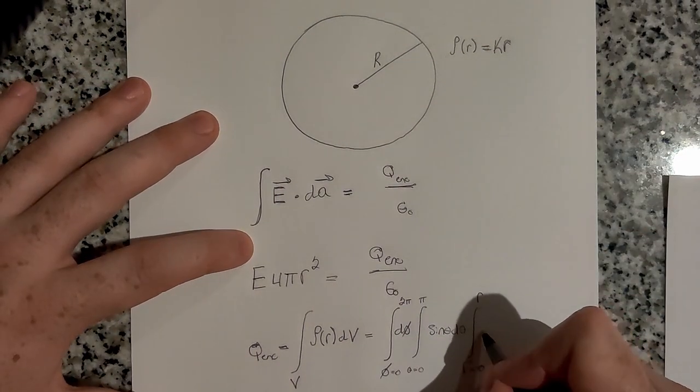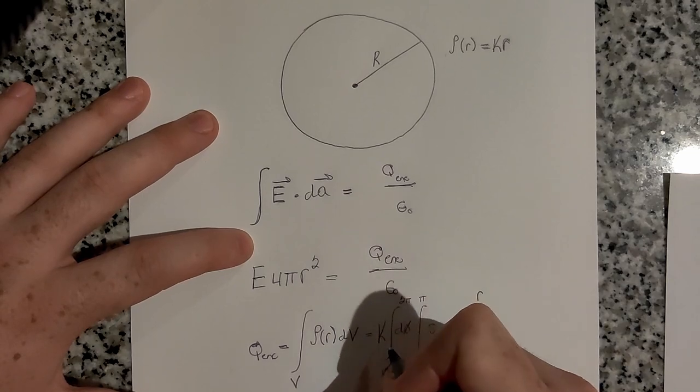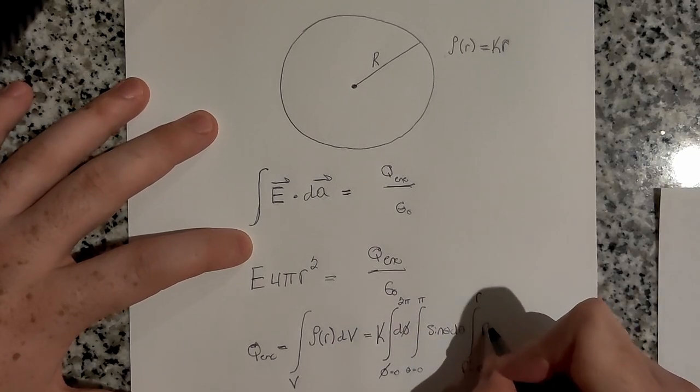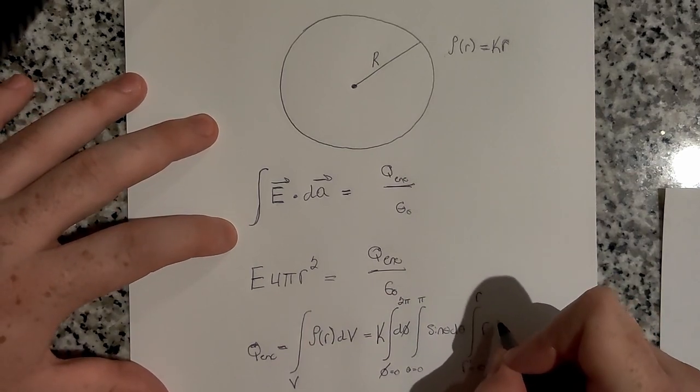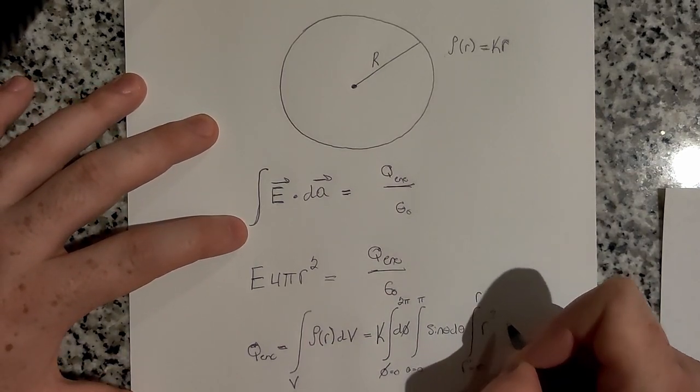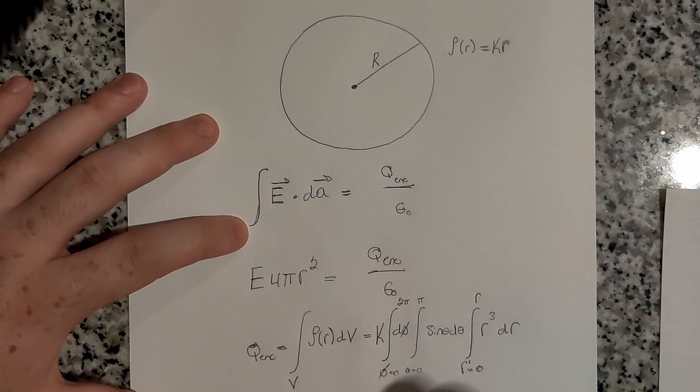And so we have kr, which I'll pull k out to the front since it's just a constant. So we have r times r squared. That comes from the differential volume element. So this is going to be r³, and then just dr.